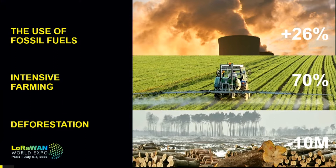Agriculture and livestock consume every year 70% of the global water resources of the planet. And by chance, 70% is also the percentage of mammals in the world intended for human consumption. Just in case you're wondering, 26% is humans and only 4% is wild mammals — the lions and all the animals we see in documentaries.